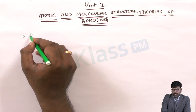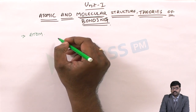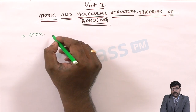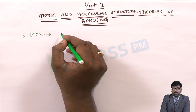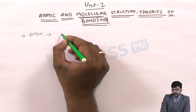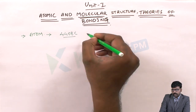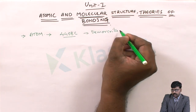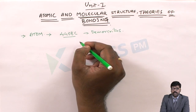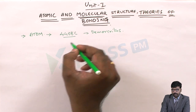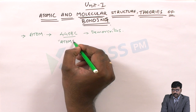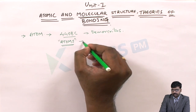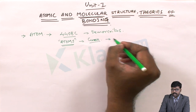To know how the atom is being constructed right from the centuries, scientists have been investigating that. In that scenario, the first experiment was done by Democritus in 440 BC. He is the scientist who started thinking about how substances are being made. He said that substances are made up of tiny, undivided particles called atoms. He was a Greek scientist, and in Greek, the word atom means indivisible.